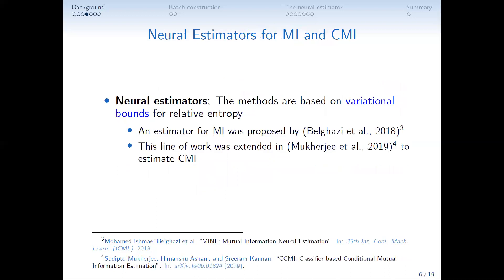In recent works based on variational bounds for relative entropy, neural estimators have been proposed — one in 2018 for mutual information and, in the same line of research, a neural estimator for conditional mutual information in 2019.